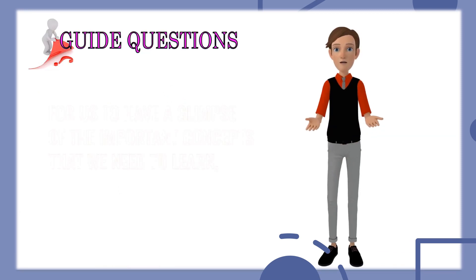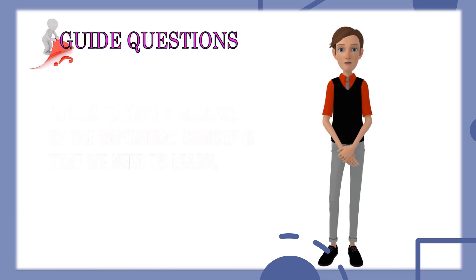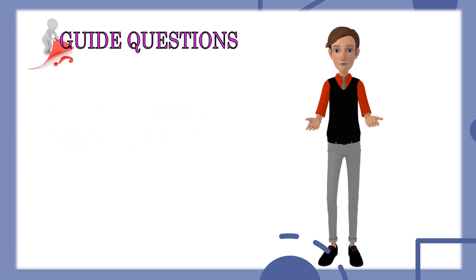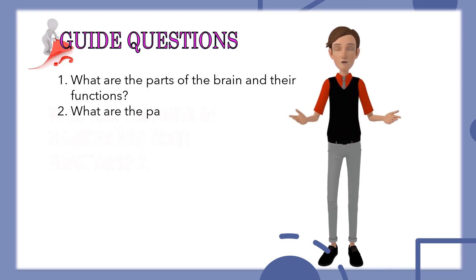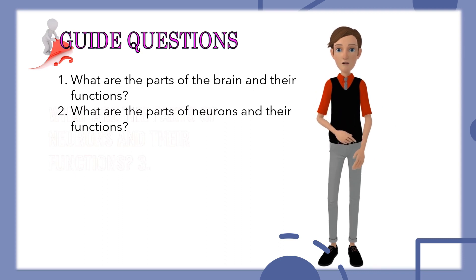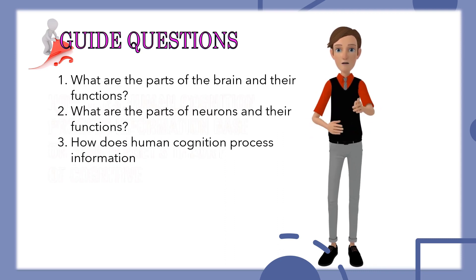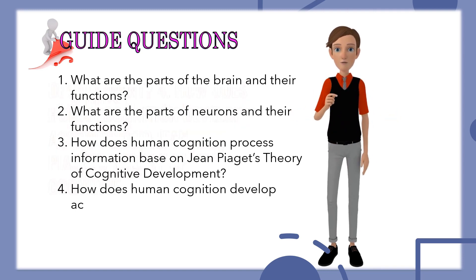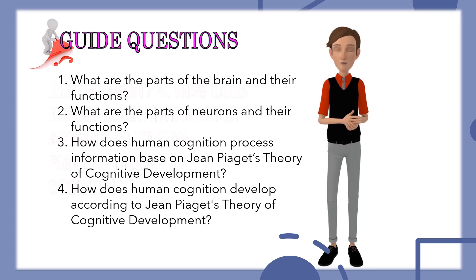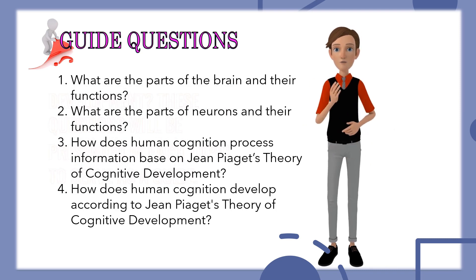For us to have a glimpse of the important concepts that we need to learn, here are questions that will help us in analyzing the lesson: 1. What are the parts of the brain and their functions? 2. What are the parts of neurons and their functions? 3. How does human cognition process information based on Jean Piaget's theory? 4. How does human cognition develop according to Jean Piaget's theory? Look for the answers to these questions.